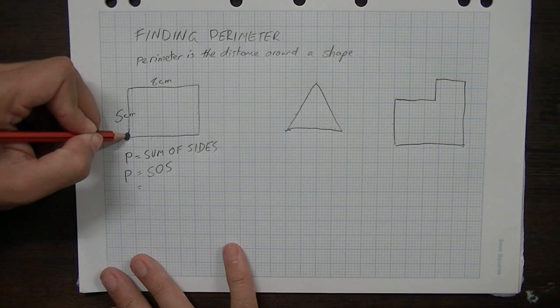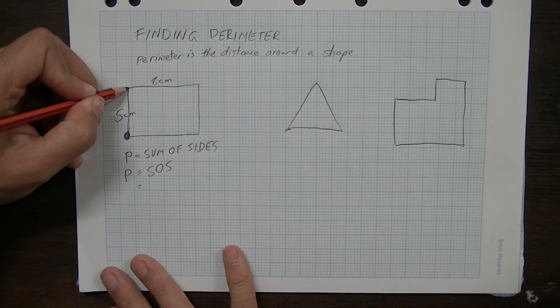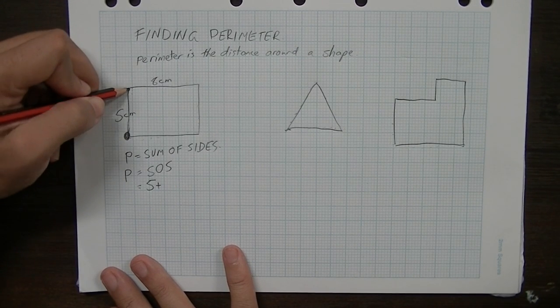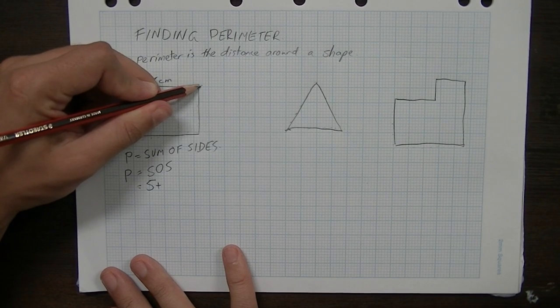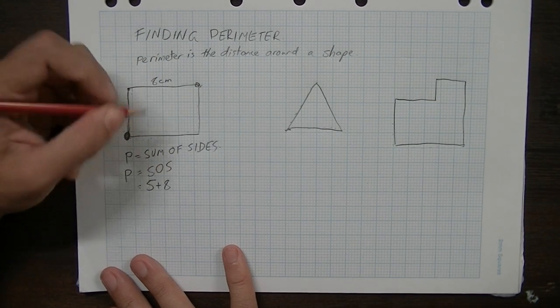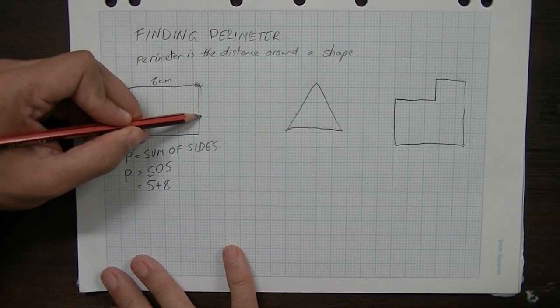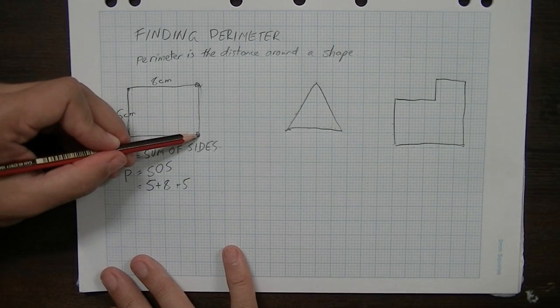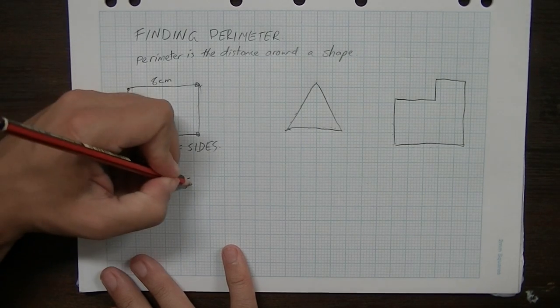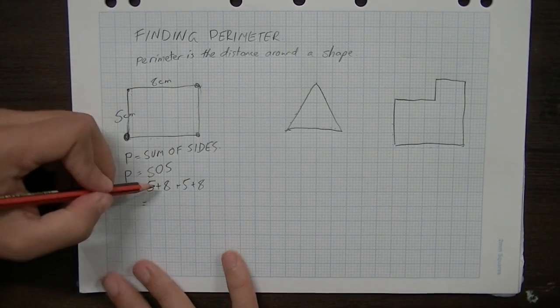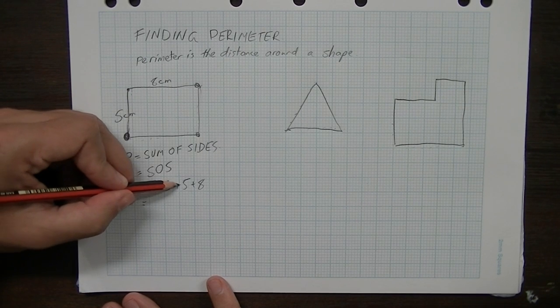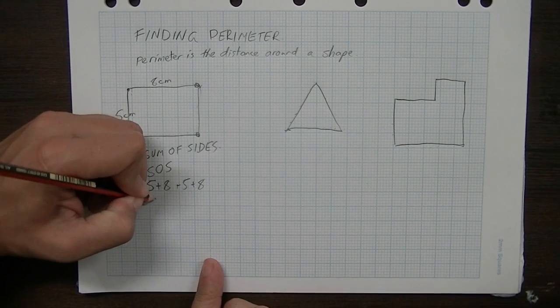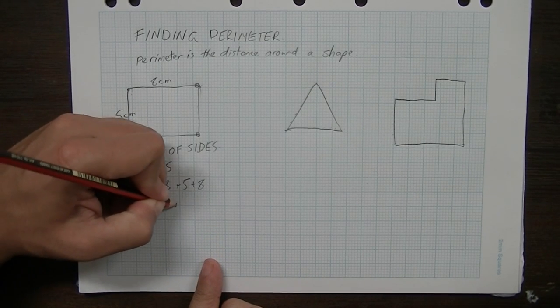So I walk from here to here, that's 5cm. Walk from here to here, that's 8cm. Walk from here to here, that's another 5cm. And finally I'll walk from here to here, and that's another 8cm. So 5 plus 8 plus 5 plus 8, you can type that into your calculator, that's going to give me 26cm.